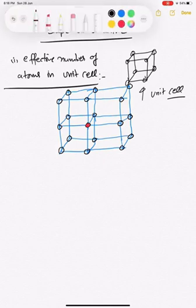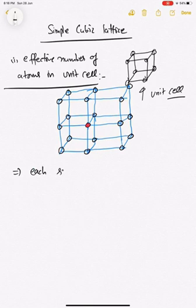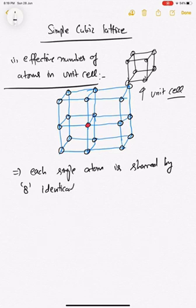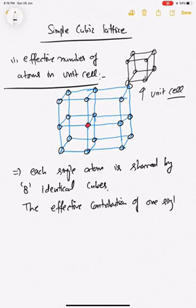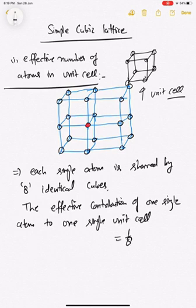We have concluded that each single atom is shared by eight identical cubes — the unit cells. In other words, the effective contribution of one single atom to one single unit cell will be one-eighth of the volume of one atom.